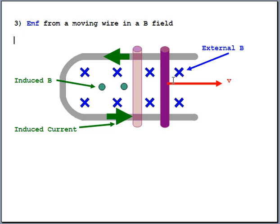It's kind of like that moving bar is like a battery. This end up here would be like the positive end, where current's coming out of it and going around that gray wire, then going into what would be like the negative end of a battery at the bottom of that purple bar. Let's see if we can figure out an equation for how much voltage you would actually get.